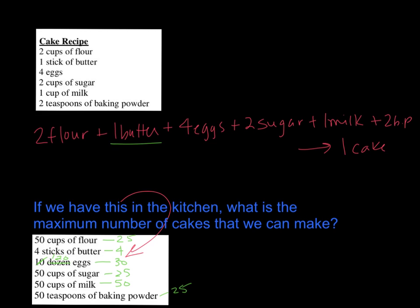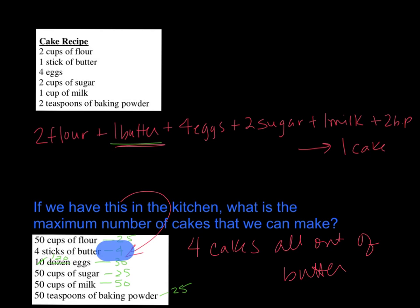The maximum number of cakes we can make is four, because once we've made four cakes we're all out of butter. If all the butter is gone we can't make any more cake, because it's one of the required ingredients. So the butter in this case is called the limiting reagent.